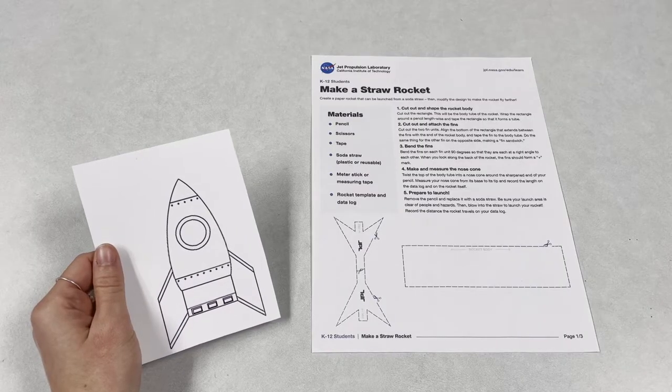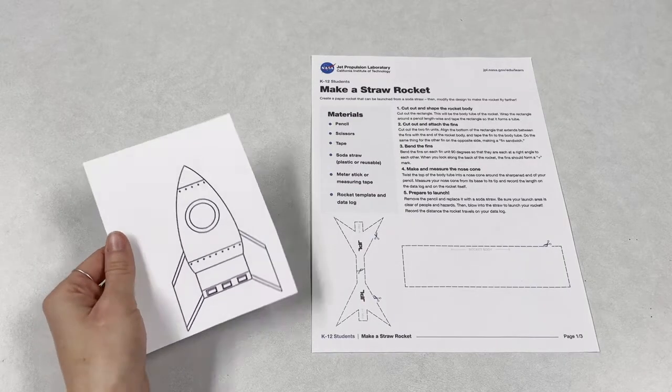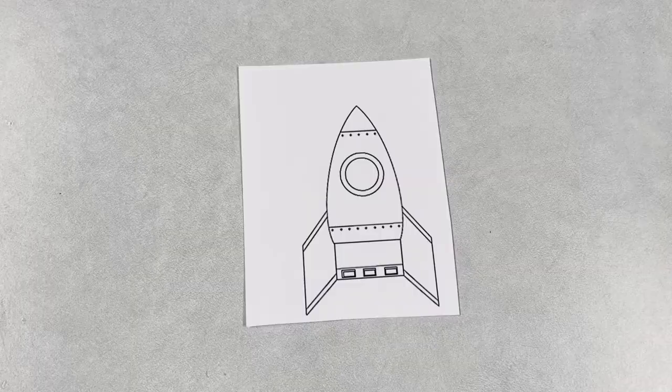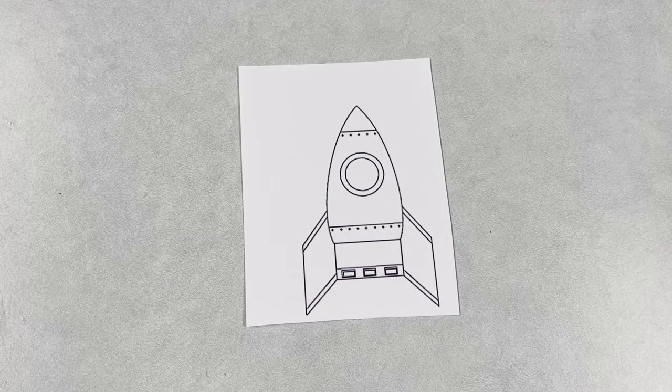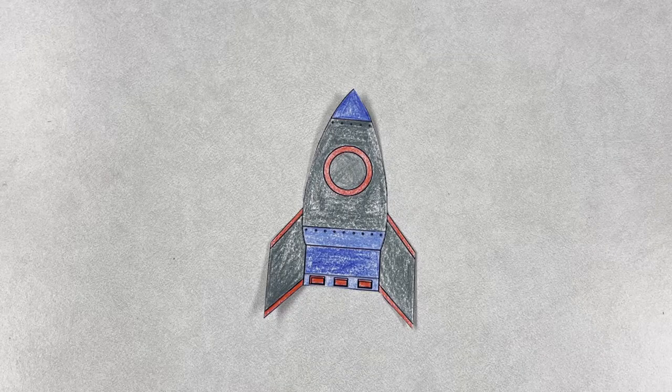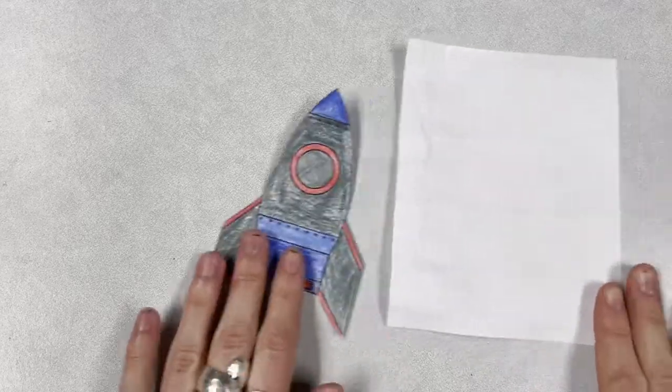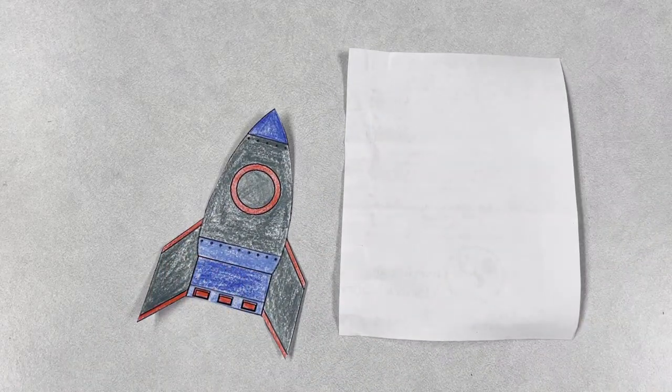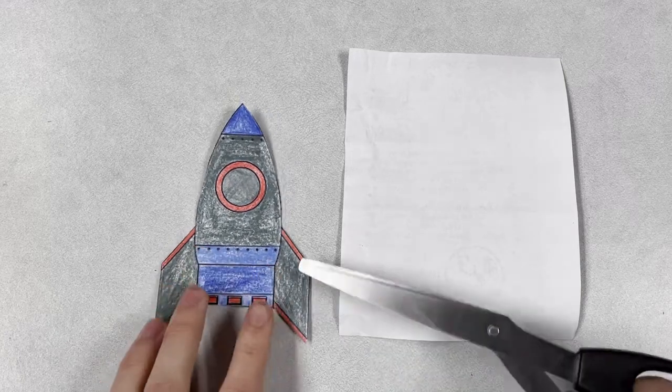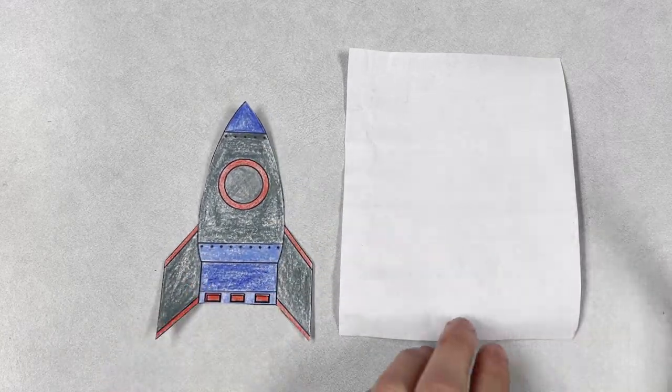You can make one or both of these rockets. Let's start with this one. First color your rocket and then cut it out. Once you're finished coloring, take your scrap piece of paper and cut it so it's about the same length as the body of your rocket.